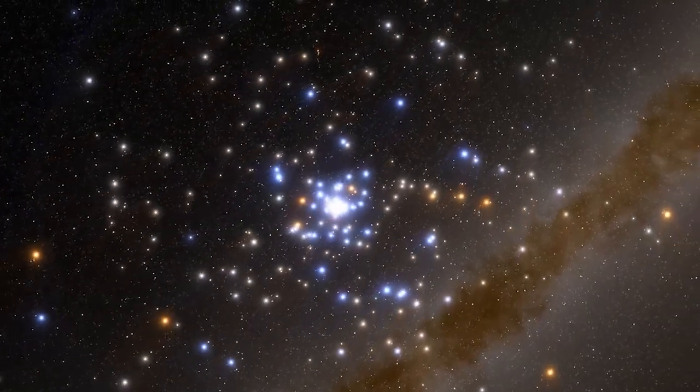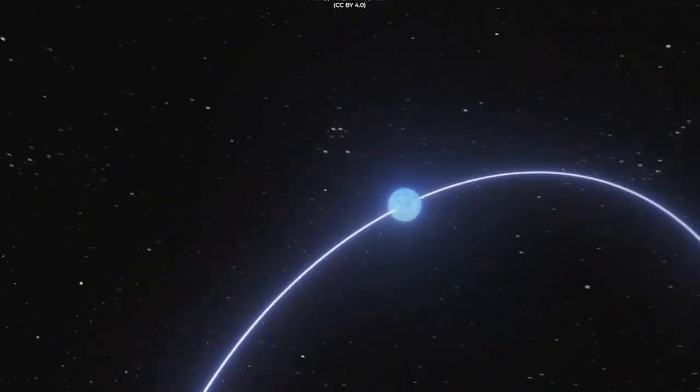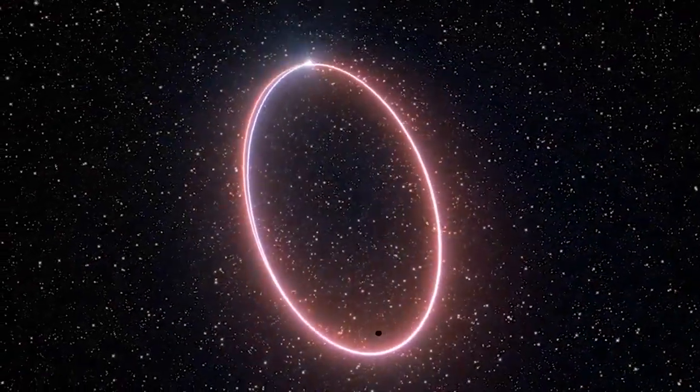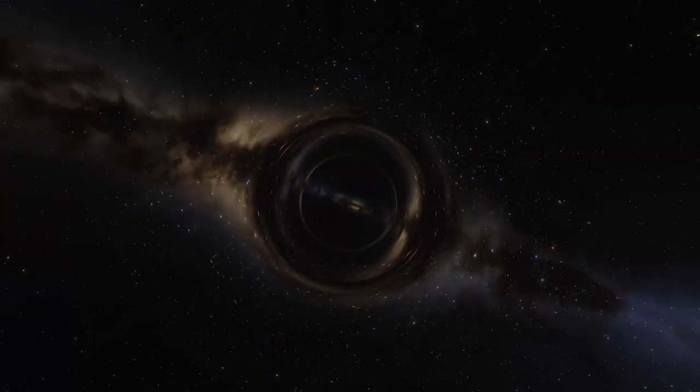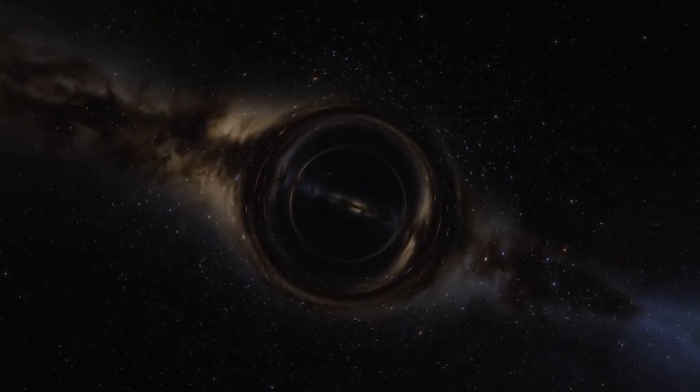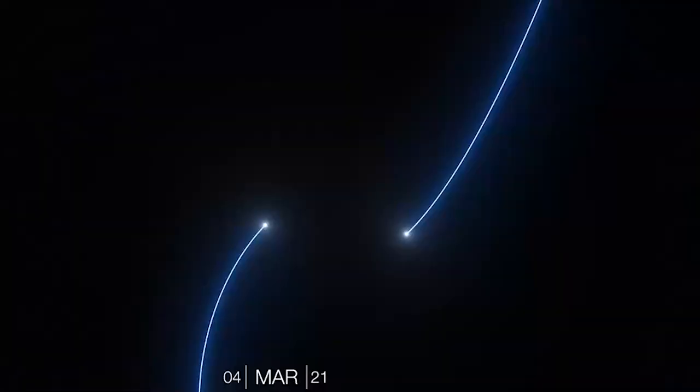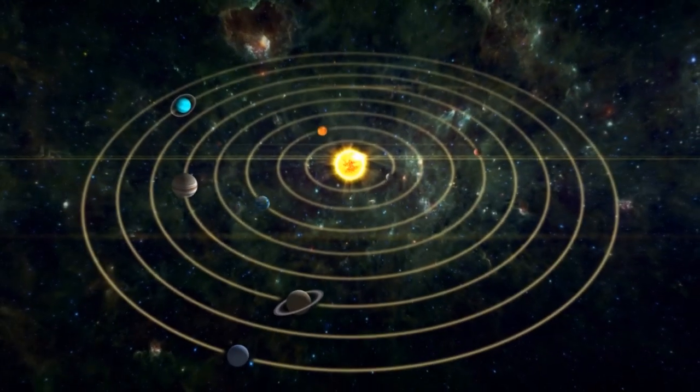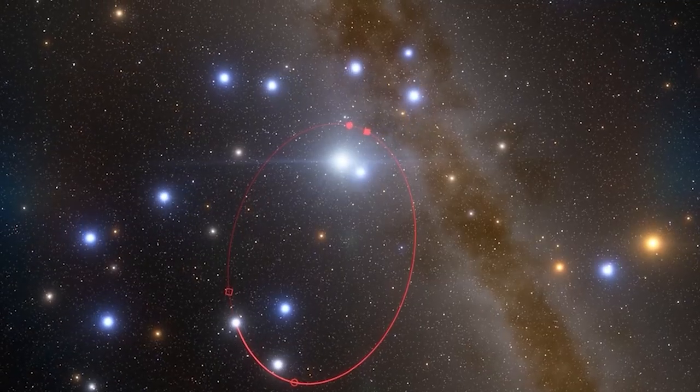During this rapid orbit of Sagittarius A*, which has an estimated diameter of 14.6 million miles, 23.5 million kilometers, S4716 comes as close as 9.2 billion miles to the supermassive black hole. While this may seem incredibly distant, it is just 100 times the distance between Earth and the Sun, which is a relatively small distance in cosmic terms. For example, the Sun orbits Sagittarius A* at a distance of 26,000 light years.